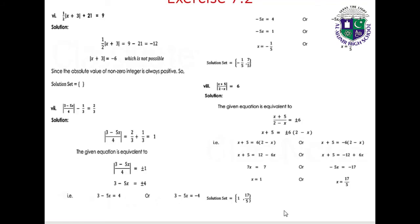Part 6: (1/2)|x plus 3| plus 21 equals 9. So (1/2)|x plus 3| equals minus 12, giving |x plus 3| equals minus 6, which is not possible since the absolute value of a non-zero integer is always positive. Solution set: empty set.